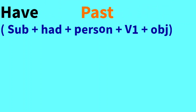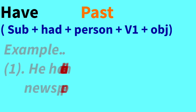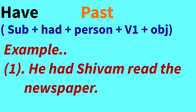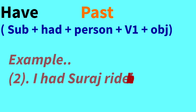Now for the past tense, 'have' changes to 'had.' The structure becomes: Subject + Had + Person/Doer + First Form of Verb. The identification of past tense at the end of the sentence includes sounds like 'iya,' 'tha,' or 'the.' The first past example is: 'He had Sivam read the newspaper.' He got the newspaper read by Sivam — the work of reading was assigned to Sivam.